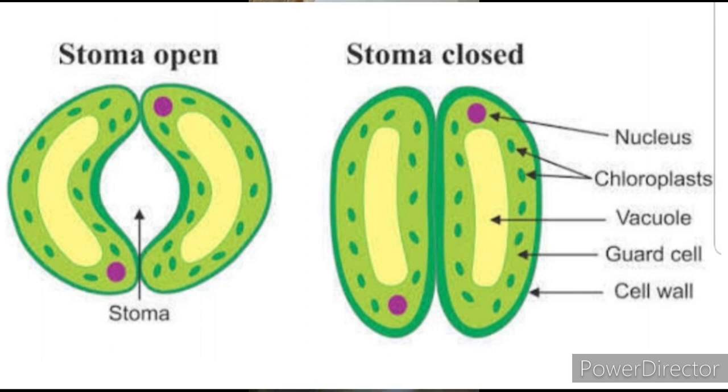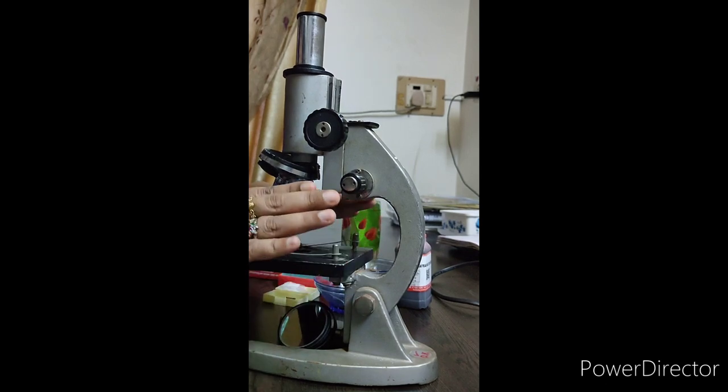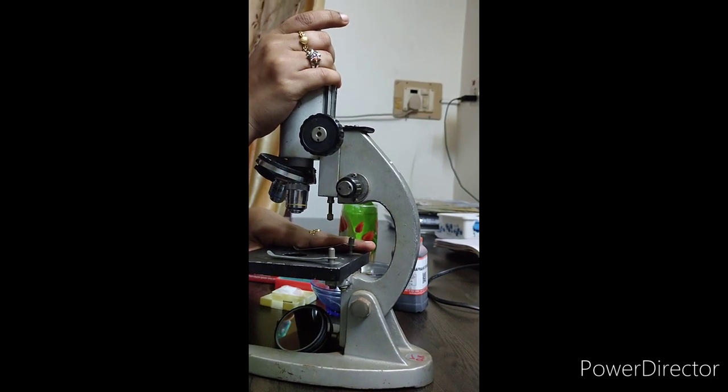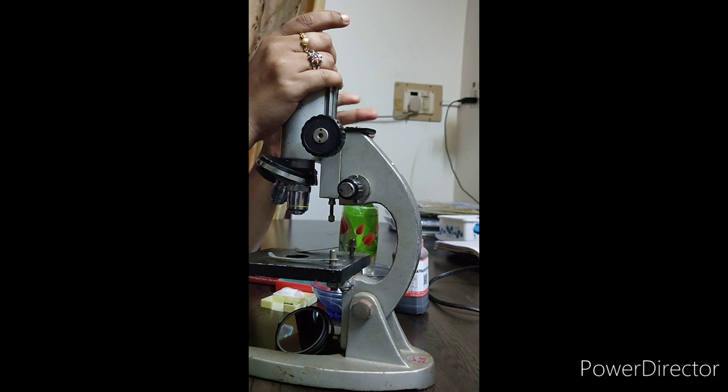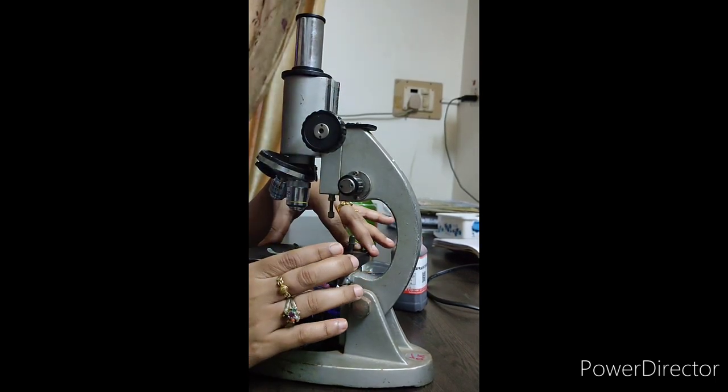For viewing such tiny minute particles which are not visible through our naked eyes, we use this particular instrument. Here, I am introducing you to the instrument which is used to view those minute objects which are not visible through our naked eyes. And here, we have the microscope.